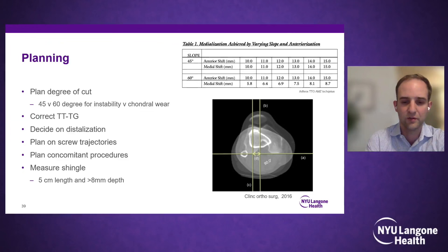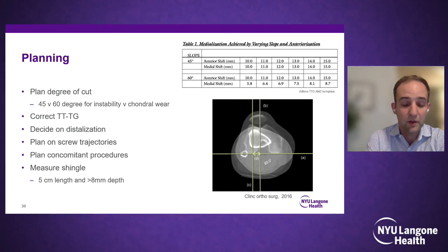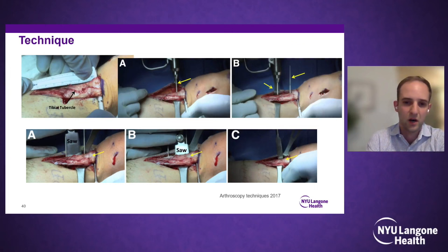The amount of distalization will depend on the degree of patella alta or the CDI ratio. One should plan out screw trajectories and think about the order of events when combining procedures such as MPFL reconstruction or chondral transplant. Typically, the TTO comes at the end of those procedures. The shingle being cut should be at least five centimeters long and eight millimeters depth to allow better bone purchase and lower complication risk. The freehand technique uses exposed pins and saw guides under fluoroscopy.